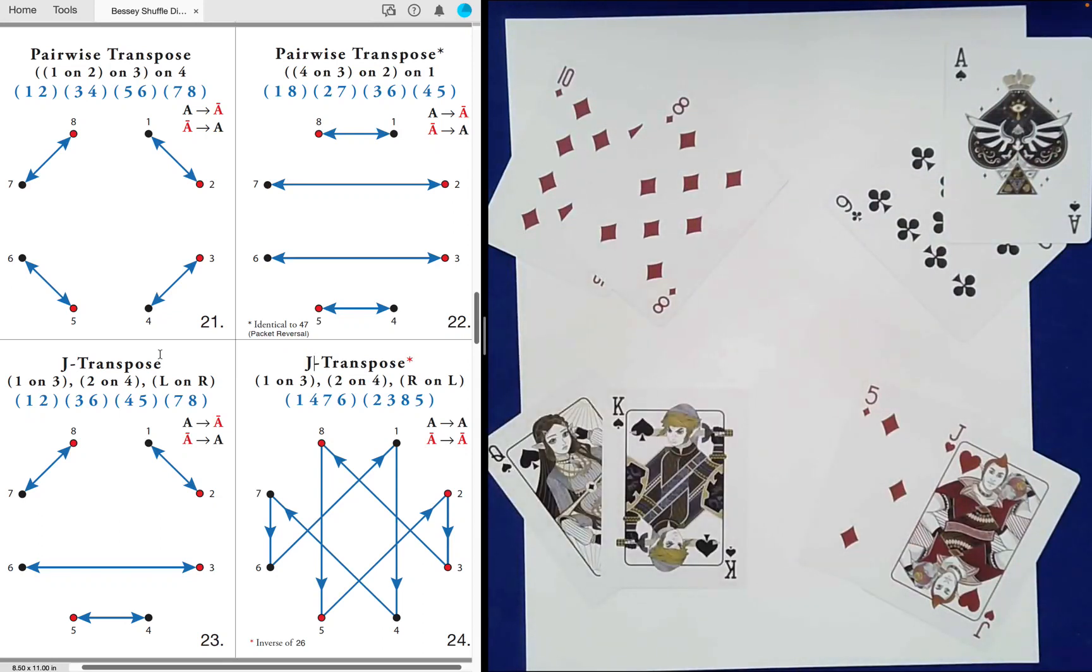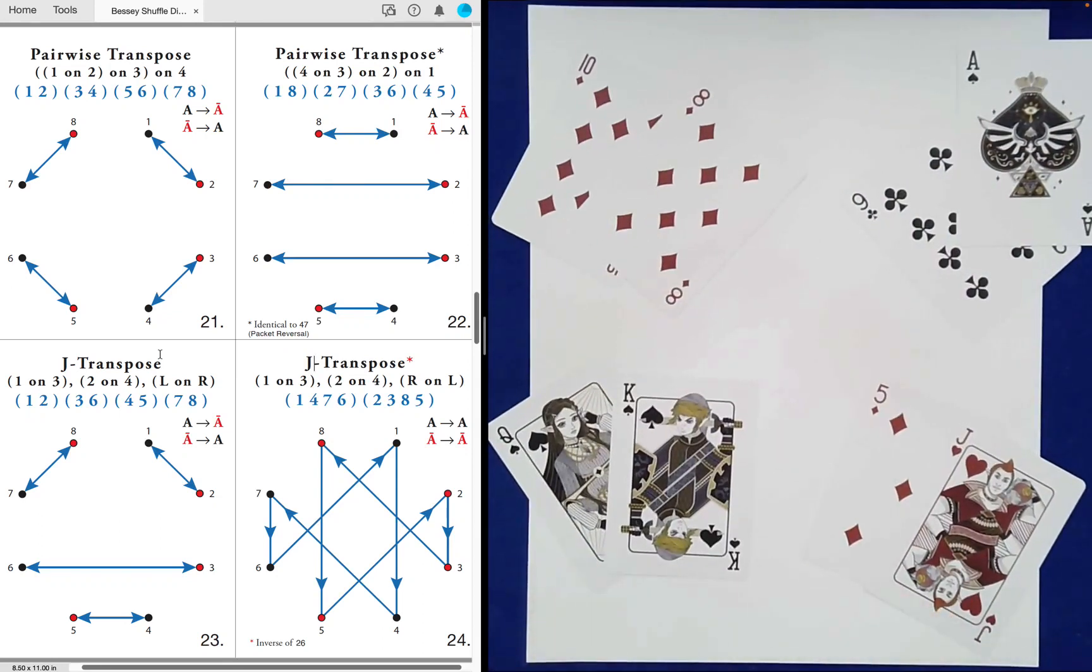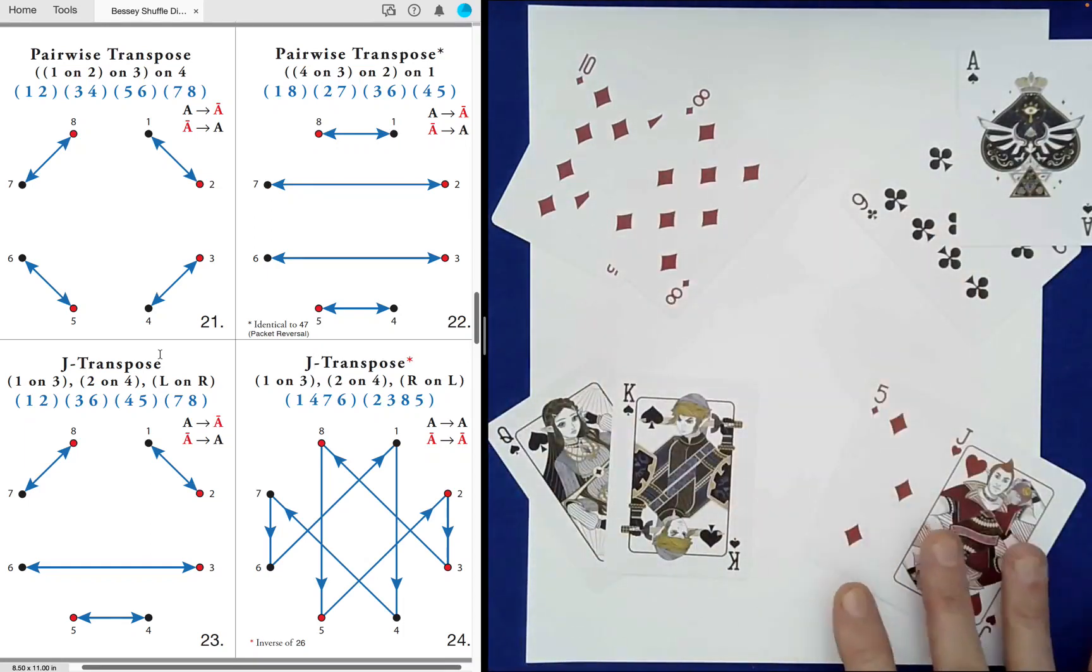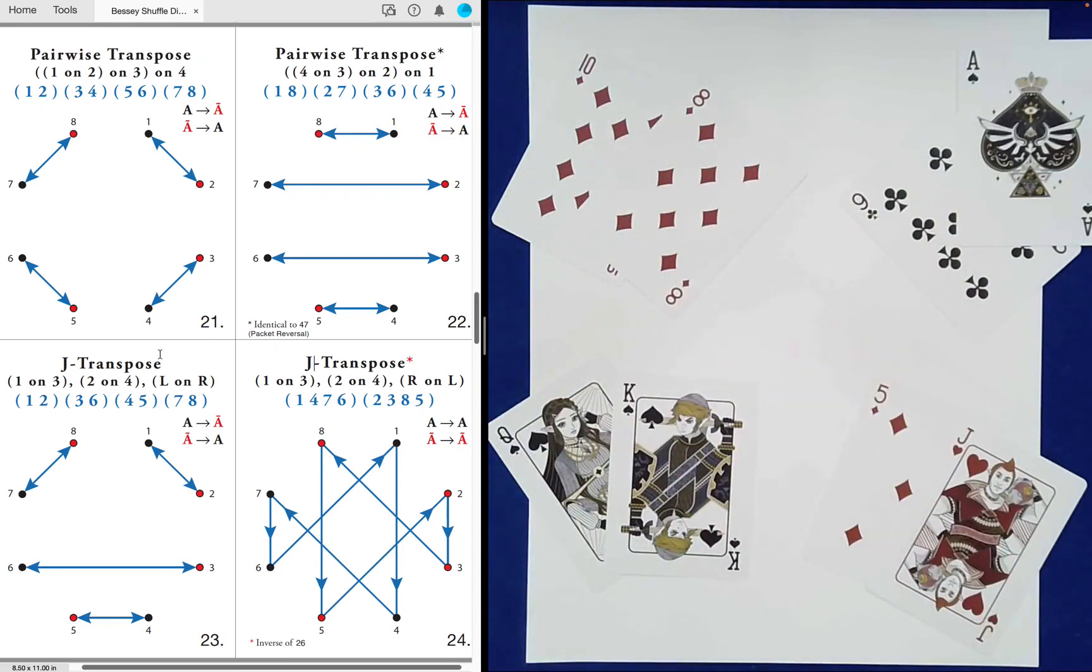How in the world was I able to feel that, to deduce that, after all of the random shuffling that we did dictated by you, the spectator? You told me how to mix those cards thoroughly, and then I just kind of separated them into piles of two in kind of a crazy way, and somehow I could tell that all of them were of the same color within the pair, but beyond that, I knew which ones were red and which ones were black. How in the world was I able to do that?